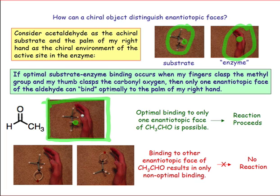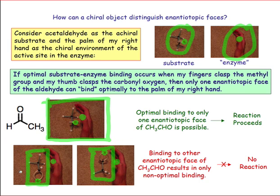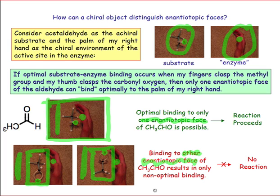The carbonyl oxygen, in that case, is in close proximity to the thumb. If we turn the molecule over — in either direction — in both of those cases the carbonyl oxygen is not oriented well to be close to the thumb. As a result, this binding is non-ideal and no reaction will occur. Notice that in both bottom cases, the exposed face is different from the exposed face in the top case. We have one enantiotopic face exposed in the top case, but in the bottom case we have the opposite enantiotopic face available for reaction.